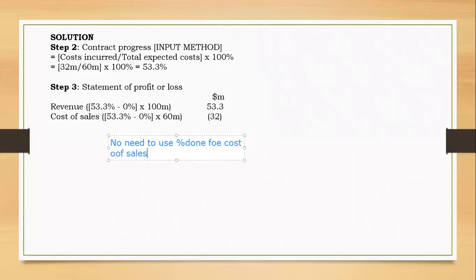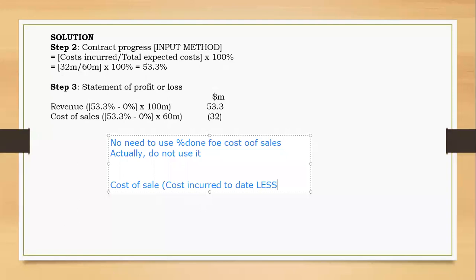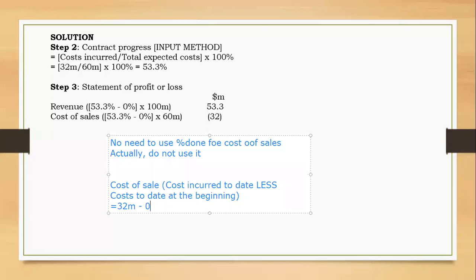I want to be very clear: there is no need to use the percentage for cost of sales — it is a total waste of time, and for some methods you could actually be wrong. Do not use it. Cost of sales is simple: just take costs incurred to date and less costs at the beginning of the year. Costs incurred to date from our computation was 32 million, and costs at the beginning were zero, so cost of sales is 32 million.